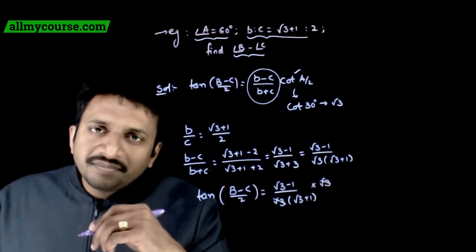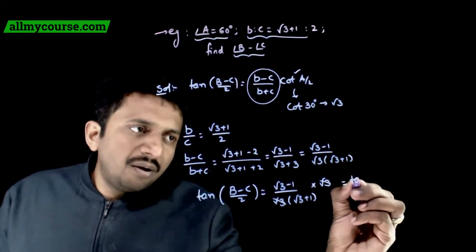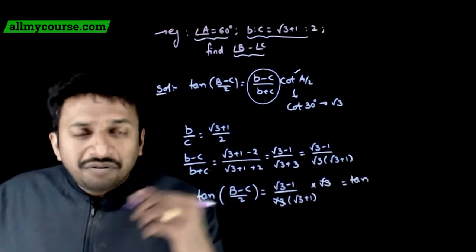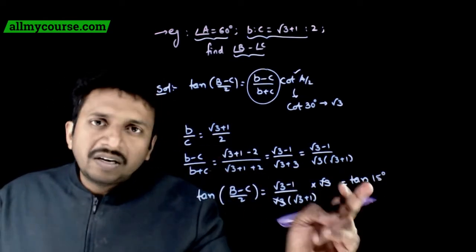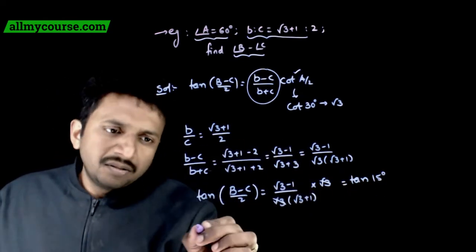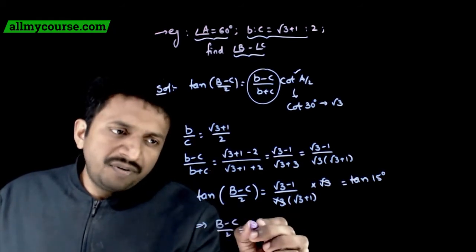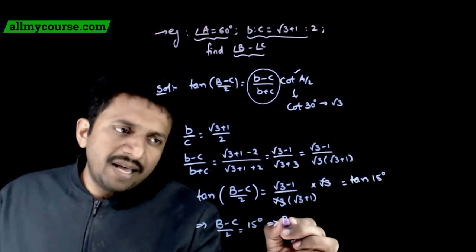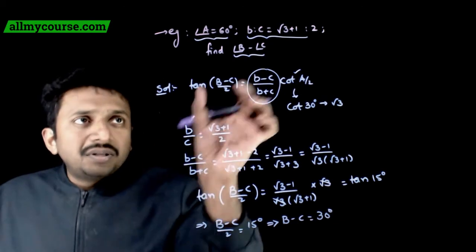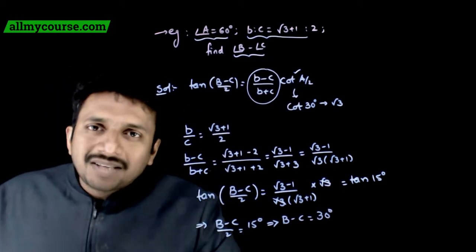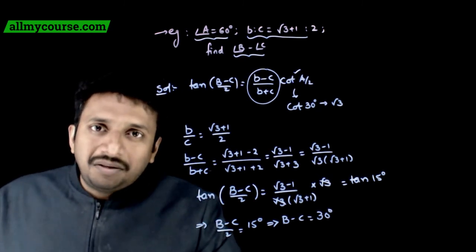The root 3 values cancel, leaving (root 3 minus 1)/(root 3 plus 1), which is the standard value of tan(15 degrees). So comparing, (B minus C)/2 equals 15 degrees, which implies B minus C equals 30 degrees. Therefore, the value of angle B minus angle C is 30 degrees. Thank you.